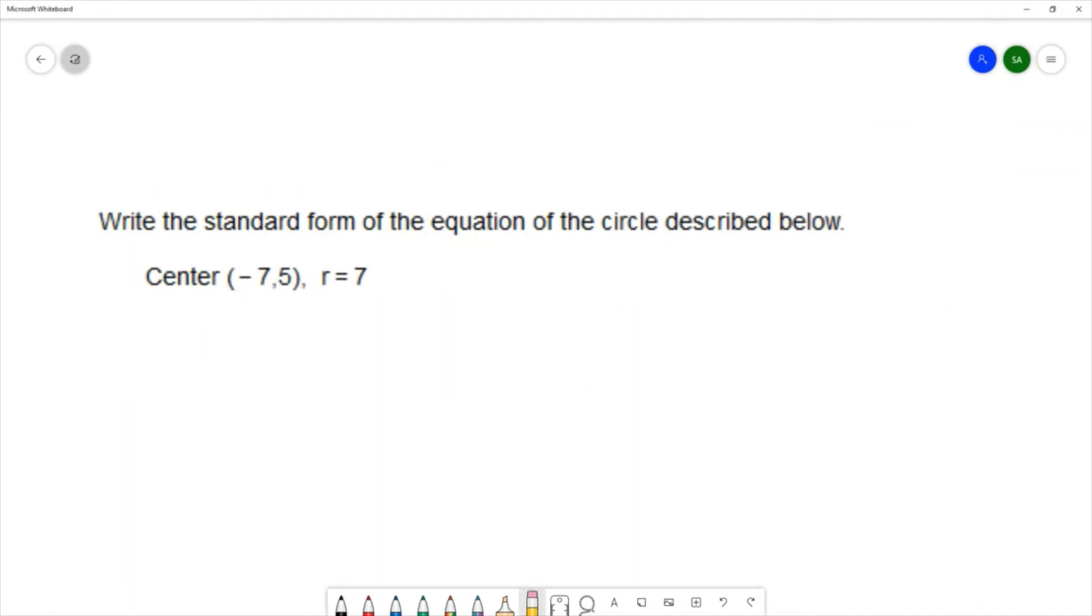For this question, we want to write the standard form of the equation of a circle described below. Our circle needs to have a center of negative 7, 5, and a radius of 7. So in order to solve this problem, we need to know the standard form of a circle. The standard form of a circle is x minus h squared plus y minus k squared equals r squared, where h and k are the coordinates of the center of the circle, and r is the radius.